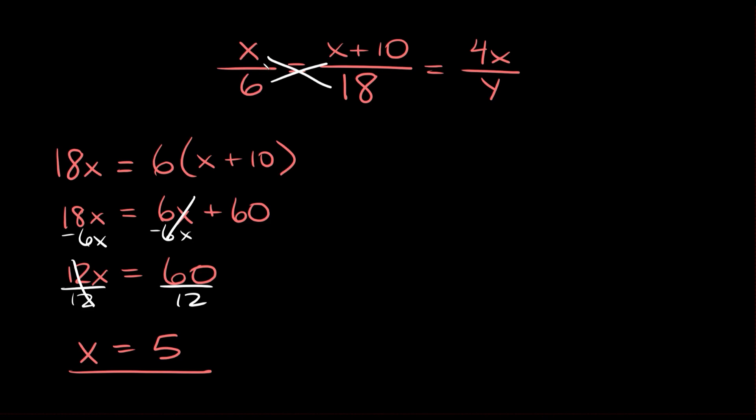Now we can use one of these fractions and set it equal to this other fraction that we're still looking for. In this case let's use x over 6 since it looks easier to work with than this one over here. So we're going to say that x over 6 equals this one, 4x over y.